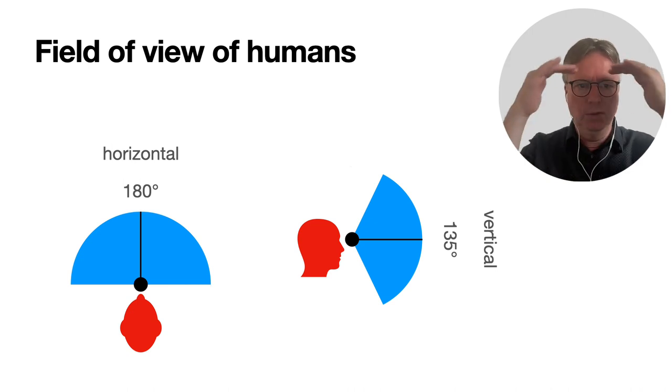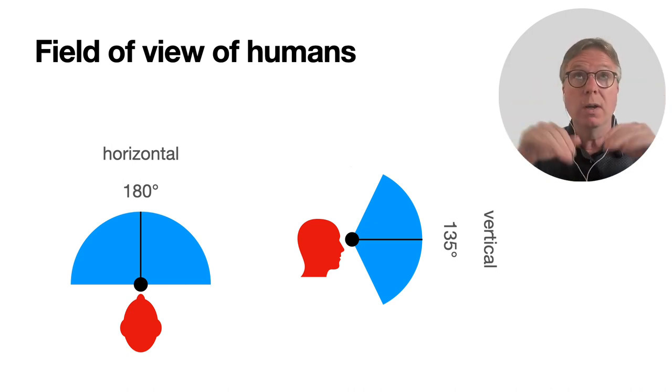If we look at the vertical field of view, it's less. The top end is my brow, the bottom part I look at my cheeks and my nose is in the way, so that's about 135 degrees in humans. I have to say this is the left eye and right eye combined. I'm not going to talk about the overlap in visual fields between the left and right eye - that's for another lesson.